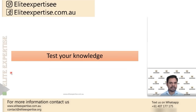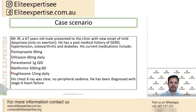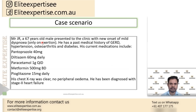Let's apply our knowledge through a case scenario. Mr. JR, a 67-year-old male, presented with new-onset mild dyspnea on exertion. His past medical history includes GERD, hypertension, osteoarthritis, and diabetes. Current medications: pantoprazole 40 mg, diltiazem 60 mg, paracetamol 1 g four times daily, metformin 500 mg BD, and pioglitazone 15 mg daily. His chest X-ray was clear, no peripheral edema, and he has been diagnosed with stage 2 heart failure.